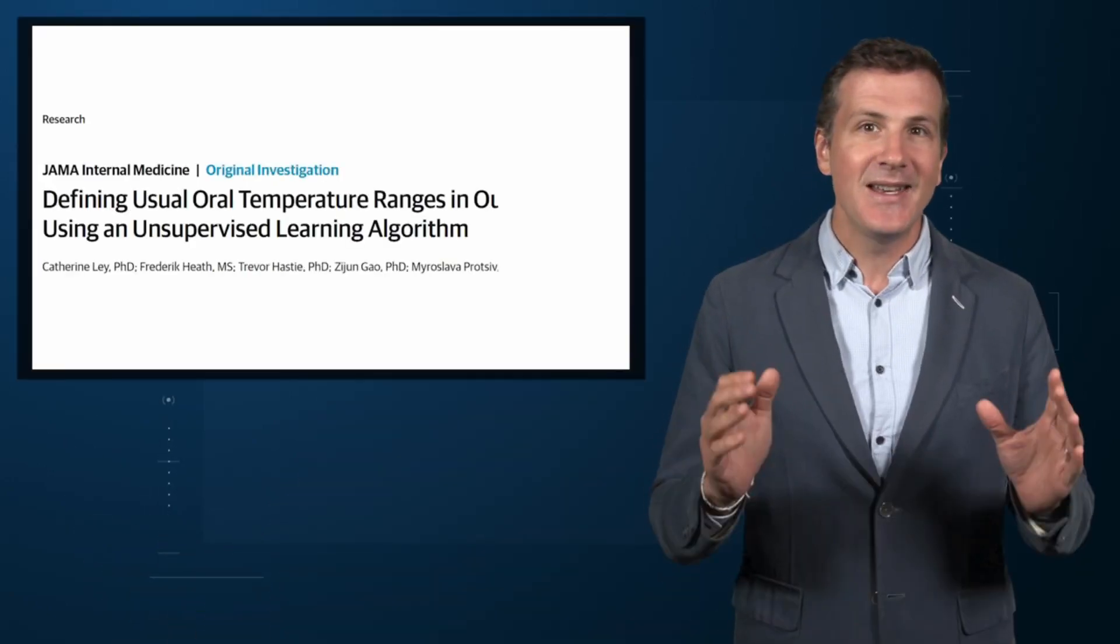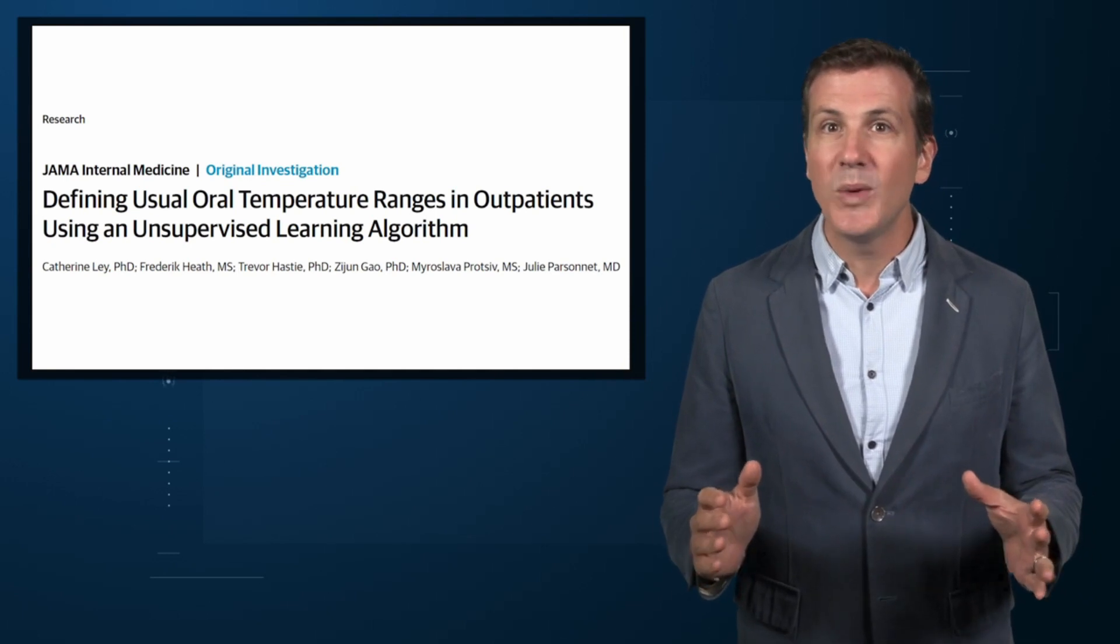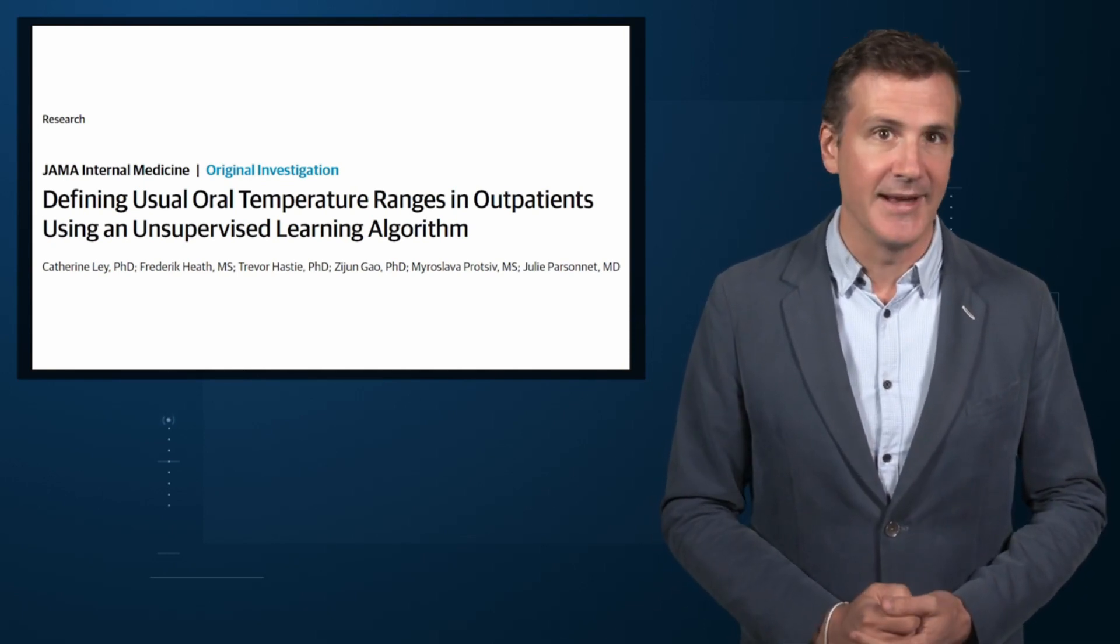The problem with measuring a bunch of people and taking the average temperature as normal is that you can't be sure that the people you're measuring are normal. There are obvious causes of elevated temperature that you could exclude – let's not take people with a respiratory infection or who are taking Tylenol, for example. But as highlighted in this paper in JAMA Internal Medicine, we can do a lot better than that.